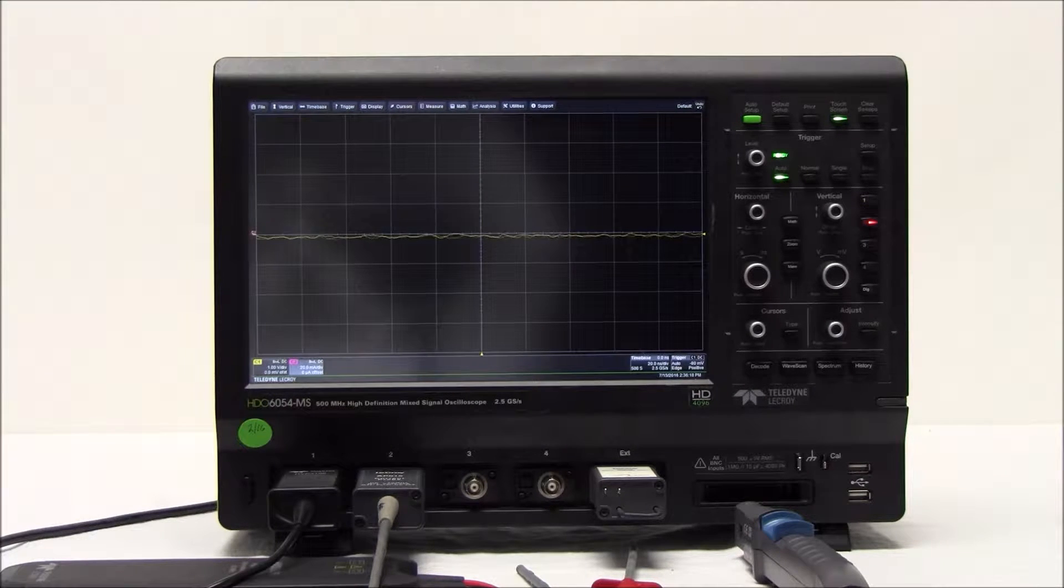Before making power measurements, it is important to eliminate any DC offset from the measurement system, deskew voltage and current probes, and set levels for zone identification.